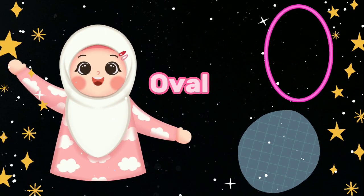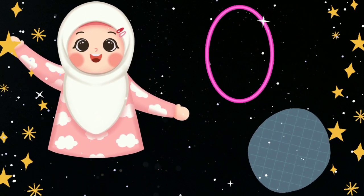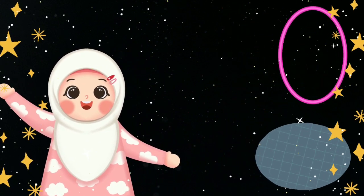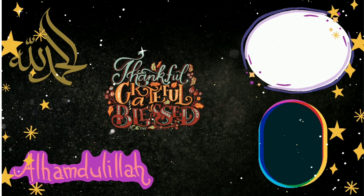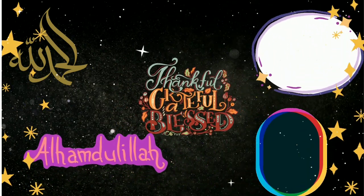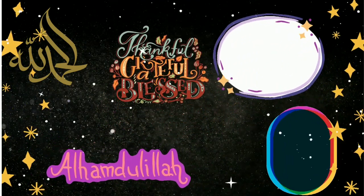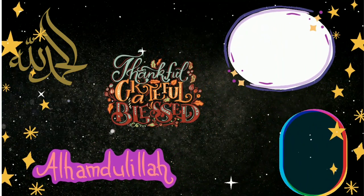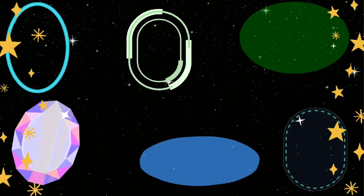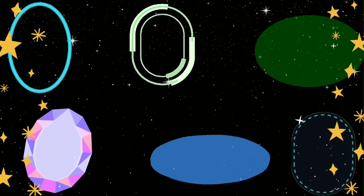Oval friend, oval friend, how do you do? How do you do? I am fine, and what about you? Shukar alhamdulillah. How many corners do you have? I have no corners. I am oval, oval.